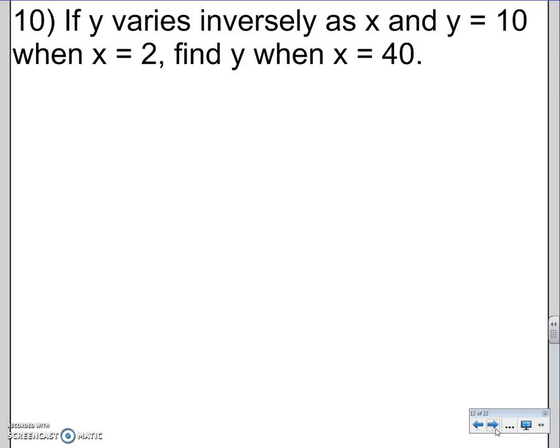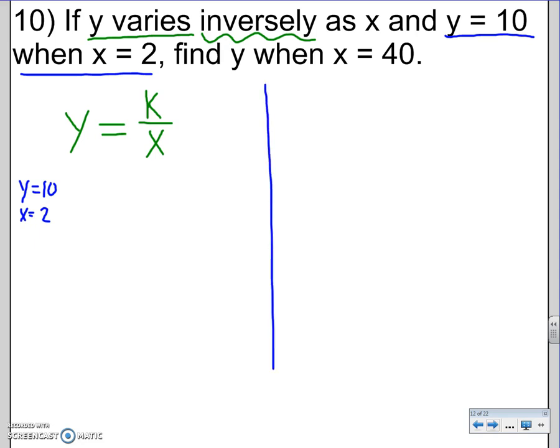10. Variation. If Y varies inversely. So, I see the word Y varies. Y varies means equals. Inverse, remember, the formula for inverse is division. K over, it varies inversely as x. K over x. There's my formula. There's two scenarios for variation. And Y equals 10 when x equals 2. So, I know Y equals 10 when x equals 2. So, I'm going to use that right now. I'm just going to plug it in. So, for Y, I put 10. K, I don't know yet. But x is 2. I got to solve for K.